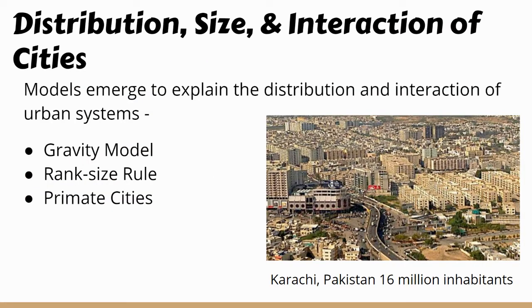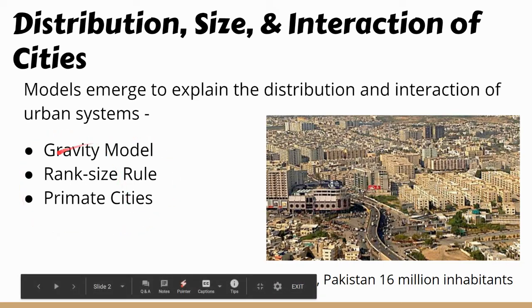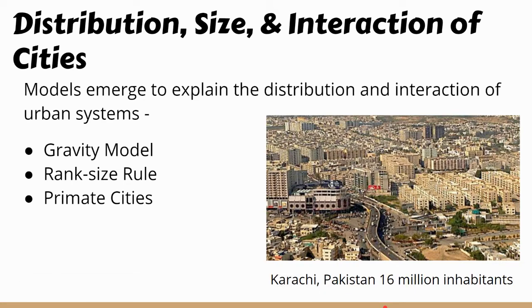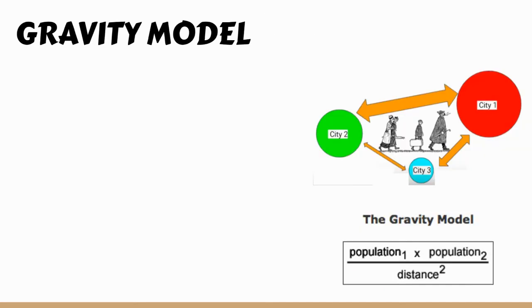What we're talking about today is the distribution, size, and interconnection of cities. There are a few models that help explain this. Originally this picture was up as a review — Karachi, Pakistan has 16 million inhabitants, so you should be thinking about this as a mega city. If you're thinking mega, you are correct, because meta is 20 million or more.